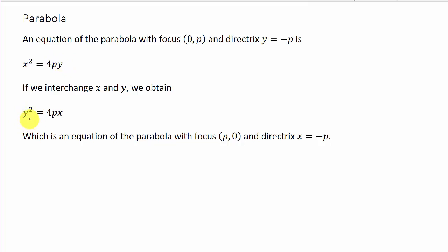And then we have one that's going to open either left or right, y squared equals 4px. The y is squared, and whether it opens left or right, that's going to depend on p. One that opens to the right, p will be positive. One that opens to the left, p will be negative. If p is positive, it will open up. If p is negative, it will open down.